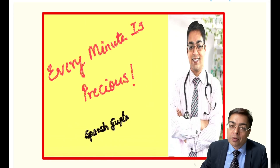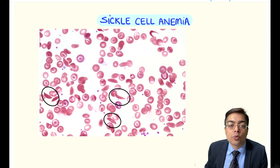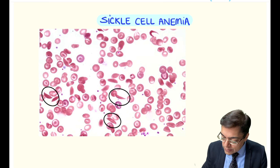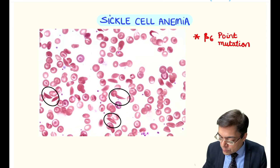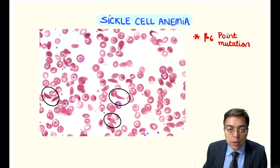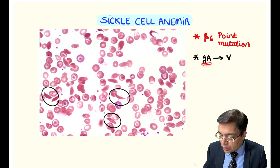Hi friends, welcome to the next episode of 'Every Minute is Pressure' series. Today we're going to be looking at a very important image of a patient suffering from sickle cell anemia. Let's recall that this is a condition seen because of a point mutation, typically at the sixth position of the beta globin chain, where glutamic acid is replaced by valine.